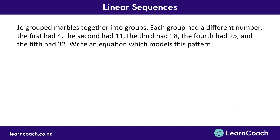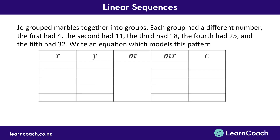Let's look at a question. Joe grouped marbles into groups, each with a different number. The first had 4, the second had 11, the third had 18, the fourth had 25, and the fifth had 32. We need to write an equation which models this pattern. It's a sequence, so we write out a 5-column table. The X column gets 1, 2, 3, 4 and 5 as always.